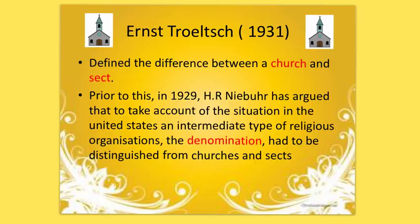Trolski in 1931 provided us with a definition of church and sect. Prior to this, in 1929, Nabia argued that we need to take into account the situation in the United States, where an intermediate type of religious organisation — the denomination — had started to occur. This gives us our three main typologies: the church, the sect, and the denomination. Each will be given its definition by Trolski or Nabia, and we'll look at the key features of each.